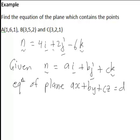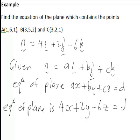So here with our normal vector 4i plus 2j minus 6k, in this case the equation of the plane has the form 4x plus 2y minus 6z equal to a constant d. And the final step now then is to find the constant d.